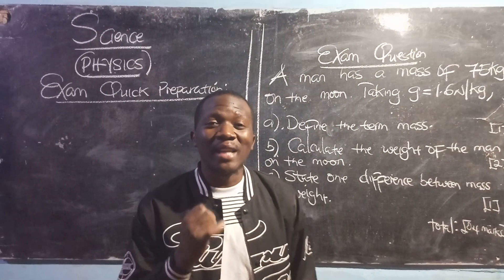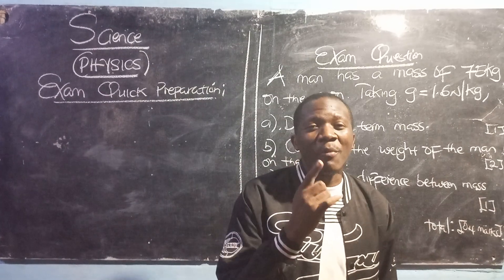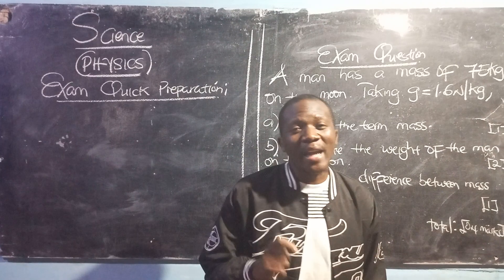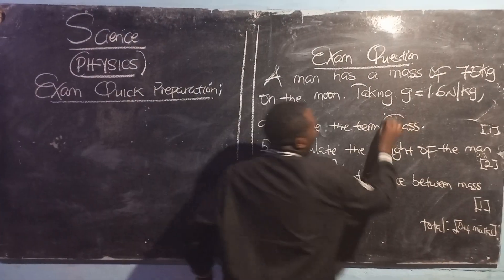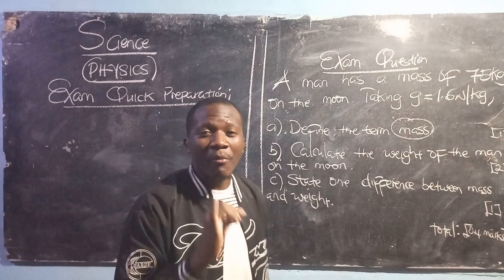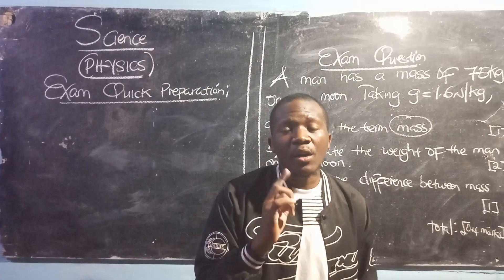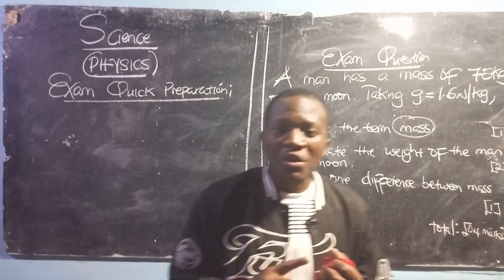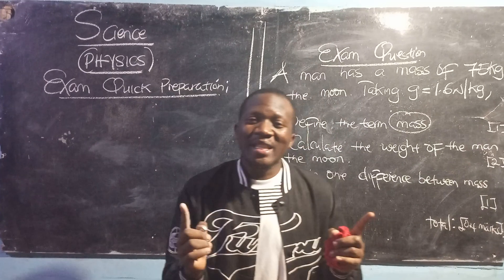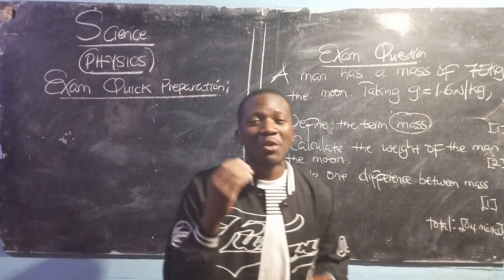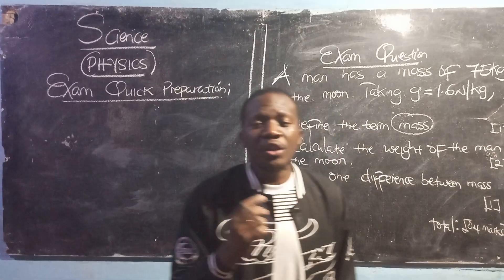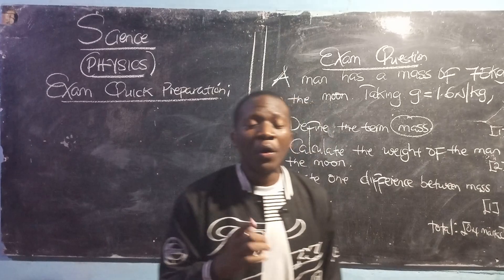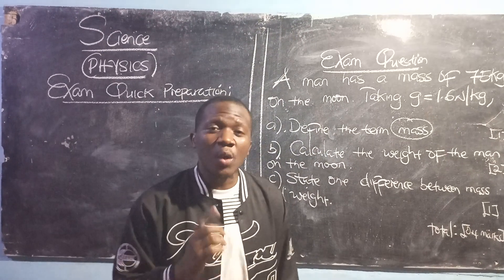What's important to understand is that mass is either the quantity of matter or the amount of matter, and this is always contained inside of an object. When we talk about mass, we are talking about the quantity of matter or the amount of matter contained inside of an object. When we try to relate mass to weight, we can distinguish using the definition — mass is the amount of matter inside of an object, whereas weight is the pull of gravity exerted on an object.